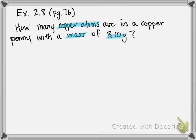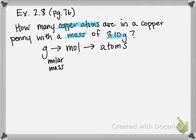We have to first go from grams to moles and then from moles we can go to atoms. So the way we're going to go from grams to moles is using molar mass which we talked about in the previous example. And the way we're going to go from moles to atoms is using Avogadro's number.